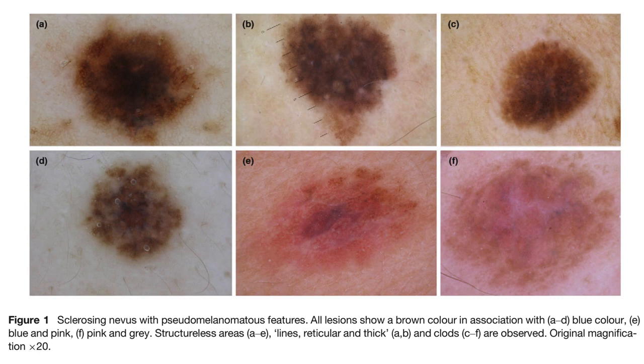Here we have another example, and we can see that all lesions show brown color in association with blue, blue and pink, and pink and gray color. Structureless areas, network and lines, and clods are present in these cases with a different distribution.